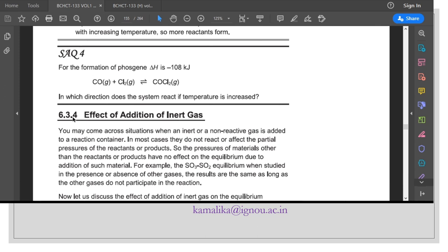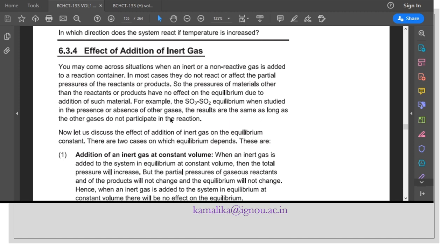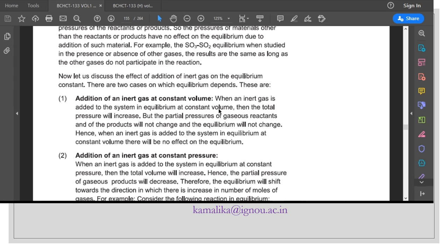Section 6.3.4, effect of addition of inert gas. If a non-reactive gas is added, for example in the sulfur trioxide-sulfur dioxide equilibrium, if you add inert gas at constant volume, then total pressure will increase. The partial pressure of gaseous reactants and products will not change, and the equilibrium will not change.